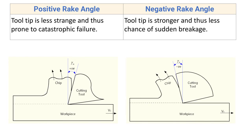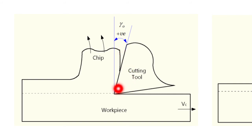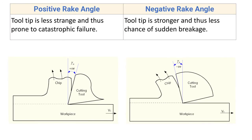Next difference: with positive rake angle, the tool tip is less strong and thus prone to catastrophic failure. Positive rake angle makes the tool tip sharp but there will be very little material at the tool tip, so this tool cannot be used for higher cutting forces or higher feed. As there is very little material at the tool tip, it becomes less strong compared to negative rake angle, and when force increases beyond a certain limit, the tool tip may suddenly break — a catastrophic failure.